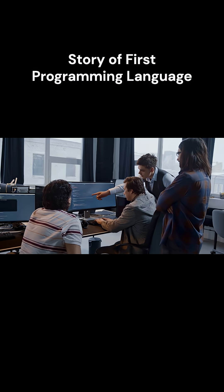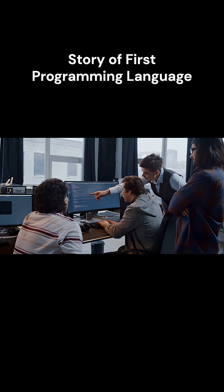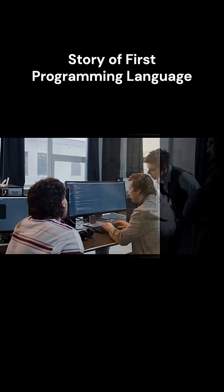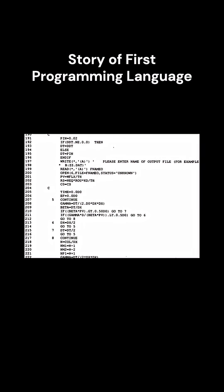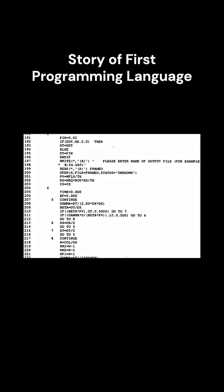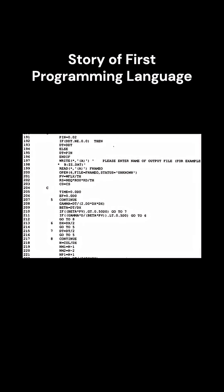After years of development, the first version of FORTRAN was released in 1957 for the IBM 704 computer. For the very first time, programmers could write code that looked much closer to math equations.